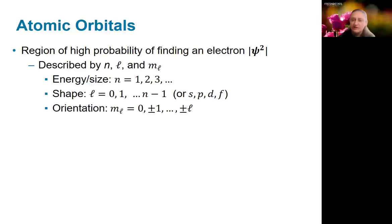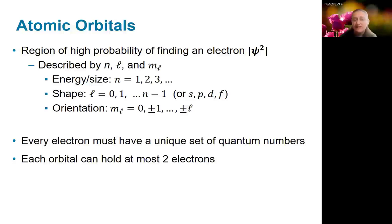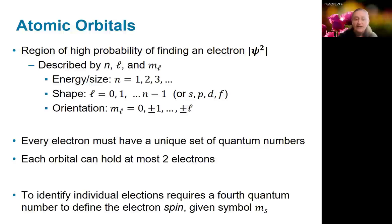The orientation — which specific orbital you have, whether it points along the x, y, or z axis — is described by m_l, which goes from 0 to ±l. So for a p orbital with l = 1, m_l can be −1, 0, or +1. Based on the Pauli principle, each electron must have a unique set of quantum numbers, meaning every orbital can hold at most two electrons. To identify individual electrons, we add a fourth quantum number for spin, which is either +1/2 or −1/2.